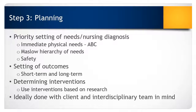Step three of the nursing process is planning. You have collected all of your data and you've made a diagnosis — now you need a plan. The planning phase is where the nurse directs the development of client outcomes with the client and family's input and identifies nursing interventions needed to accomplish those outcomes. First, decide which nursing diagnoses to implement by looking at physical needs such as airway, breathing, and circulation, Maslow's hierarchy, or safety needs. Once determined, you will work on outcomes — either short-term or long-term — and on interventions, which should be based on research.